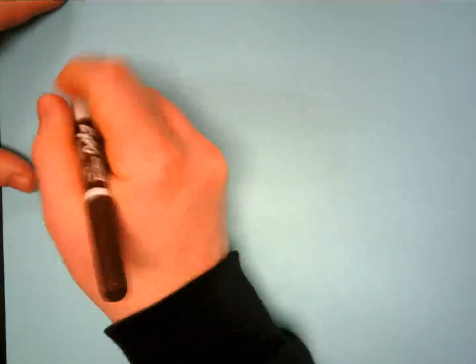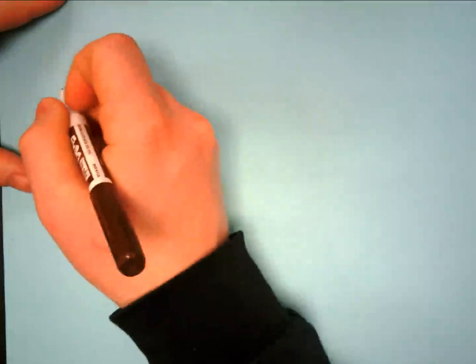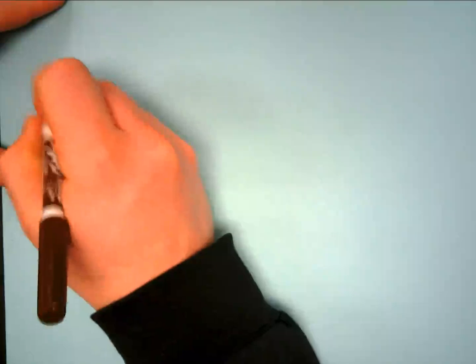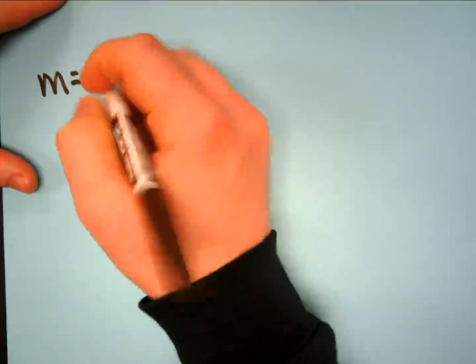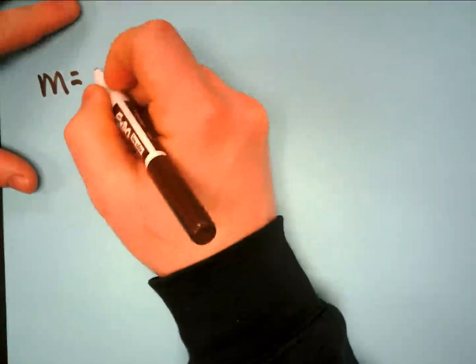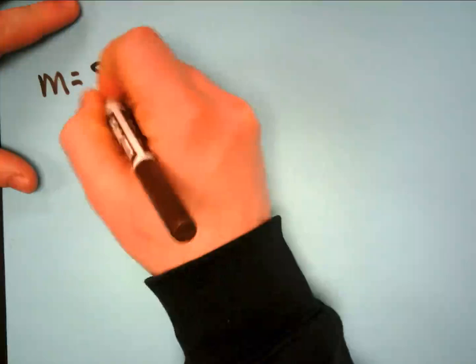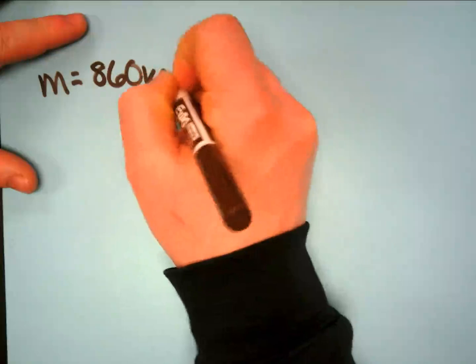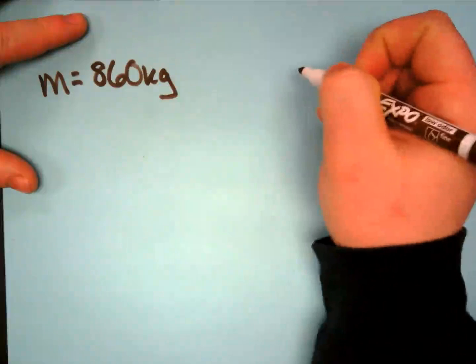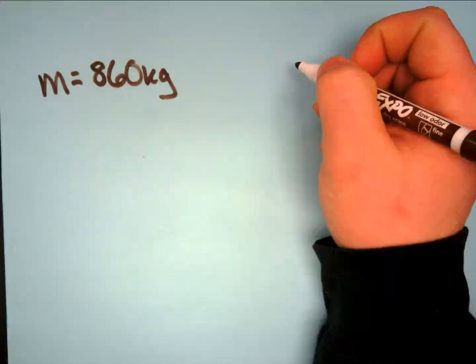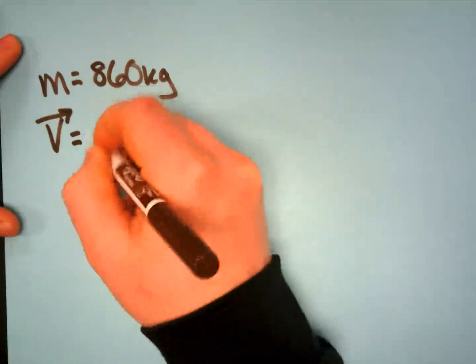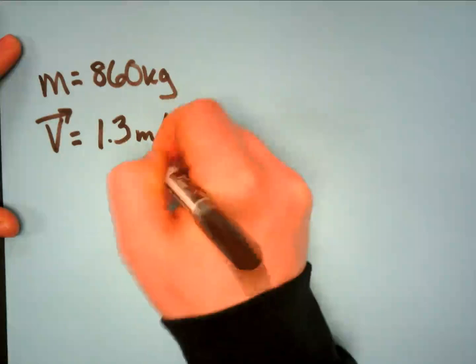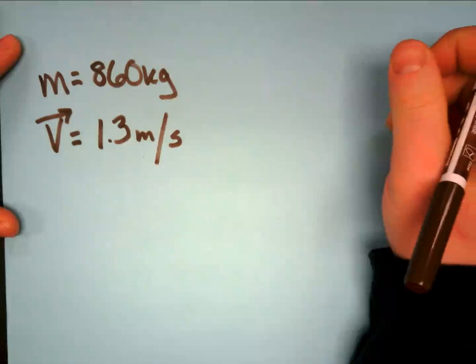Writing down what we know and what we don't know: this turtle has a mass of 8.6 times 10 to the second power, which is really just 860 kilograms. And he's traveling at a velocity of 1.3 meters per second.